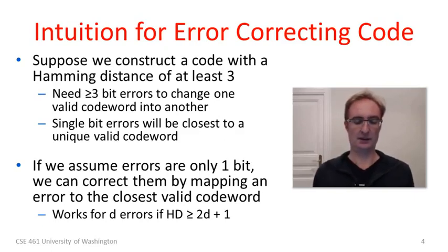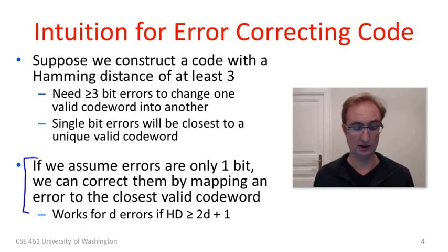Going a little further, just suppose for the moment that we could construct a Hamming code with a distance of 3. That means that we would need at least 3 single bit errors to transform a valid code word to any other valid code word. If we then have a single bit error, that will be closest to a single unique valid code word. So if we can assume, and here's one of the key assumptions, if we can assume that the errors we will see in practice will only be either 0 or 1 bit, then we can correct errors by mapping whatever bits we received to the closest valid code word. This argument also generalizes to work for correcting d errors if you have a Hamming distance of 2d plus 1.